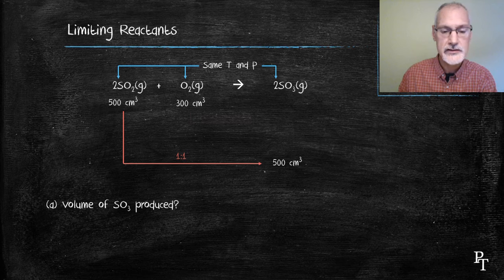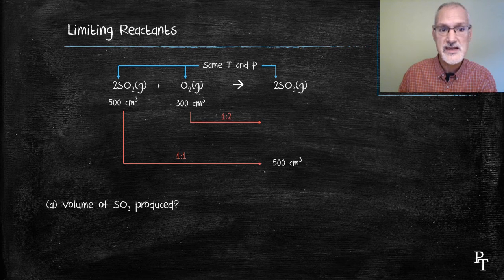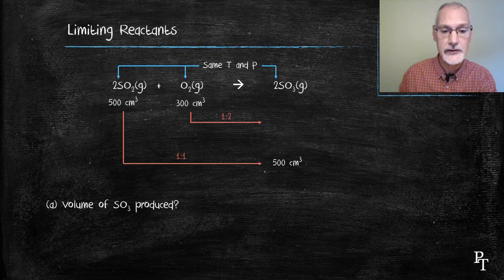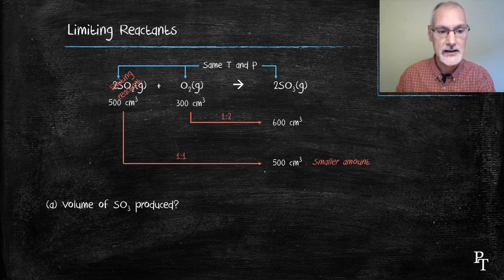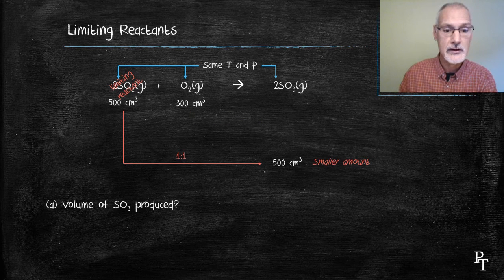If I do this with the oxygen it's a one to two ratio so I would produce twice as many particles and hence twice the volume. The rule is you can only make the smaller amount. So as a result this line doesn't happen. I only produce 500 cubic centimeters of sulfur trioxide.